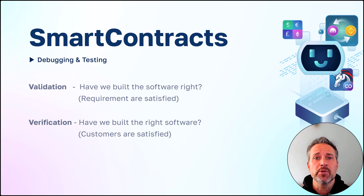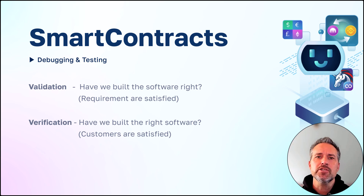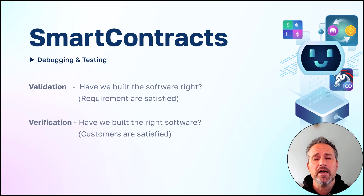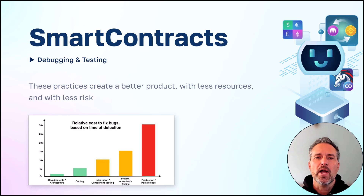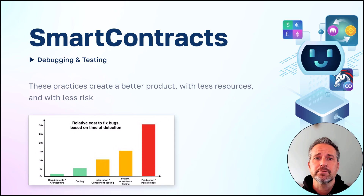Validation is: have we built the software right — did we build it correctly? And verification is: have we built the right software — does it meet our needs and our customers' needs? These practices will help us build a better product with less time and less risk.